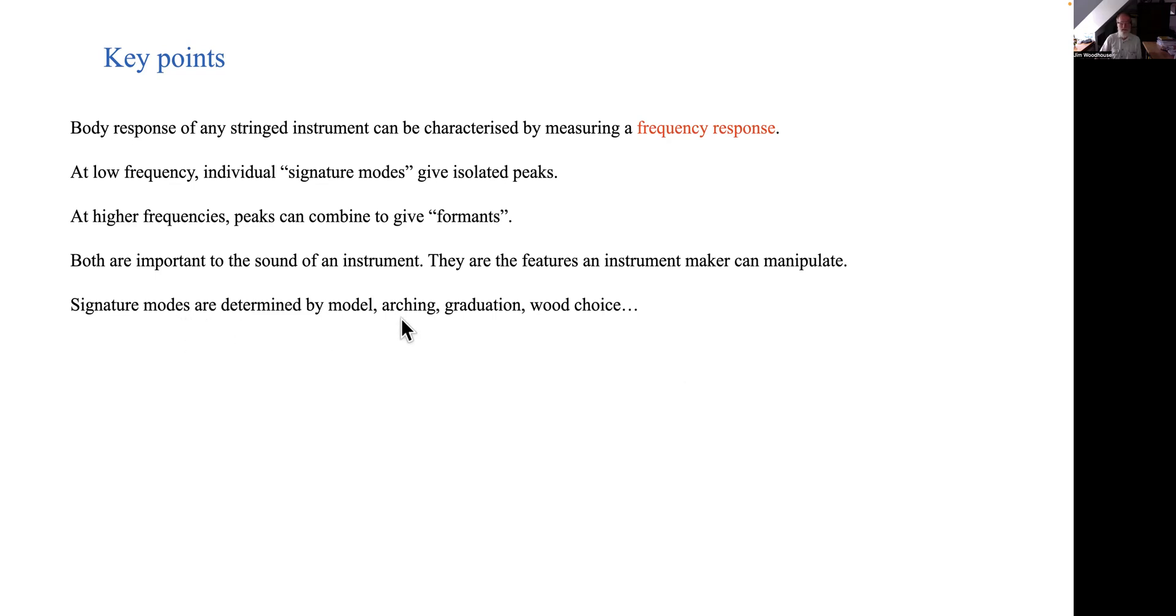If we focus in just on different violins then the signature modes will vary a little depending on the model, the arching shape, the graduation pattern, the choice of wood, all the usual things. Formants like that bridge hill that we saw are affected by all the same things but they're also affected by things to do with setup. In this particular case it's affected by the adjustment of the bridge and that chimes with something that all violin makers know. You can make significant differences to the sound of an instrument by changing the bridge or cutting it a little.